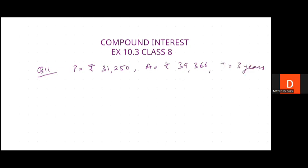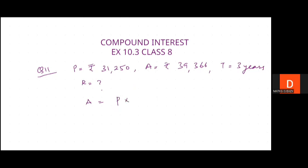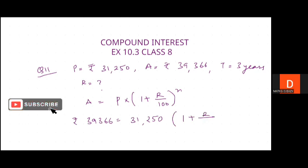We have to find the rate. We know the formula: Amount = P × (1 + r/100)^n. Amount is given as rupees 39,366, principal is rupees 31,250, and n (time) is 3 years. So we write: 39,366 = 31,250 × (1 + r/100)^3.